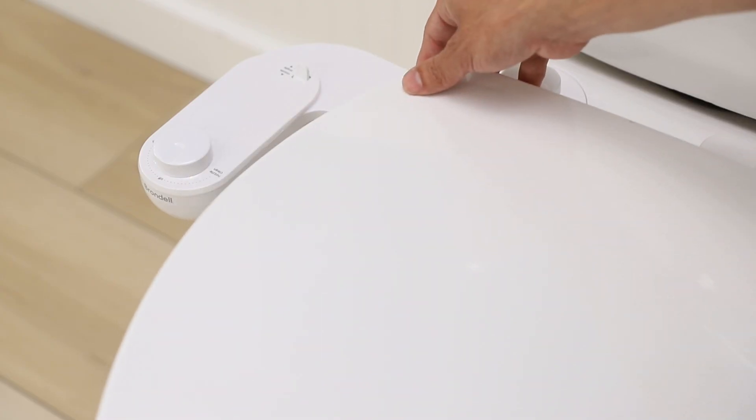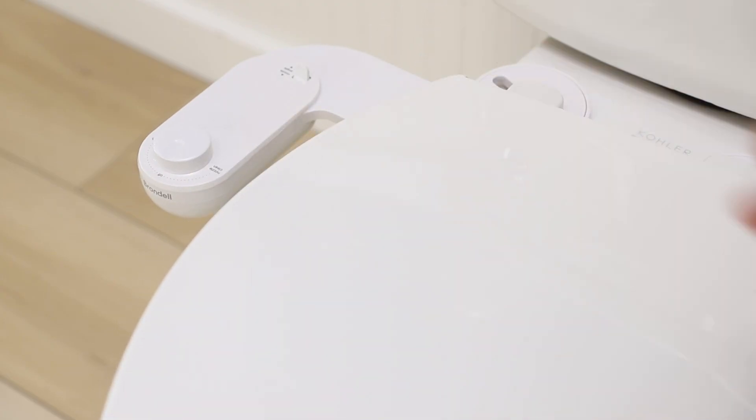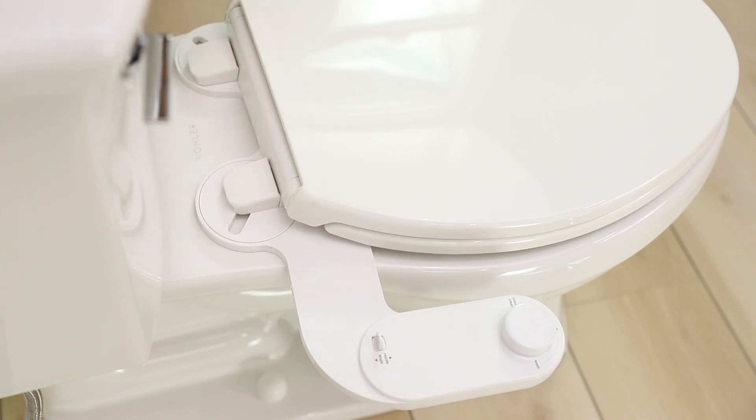Place the toilet seat back on your toilet. Adjust your bidet attachment and tighten your toilet seat in place.